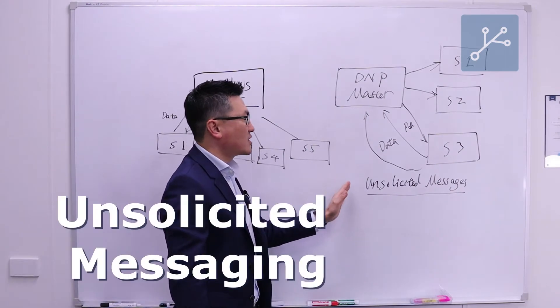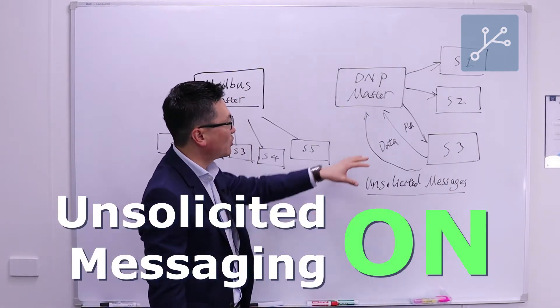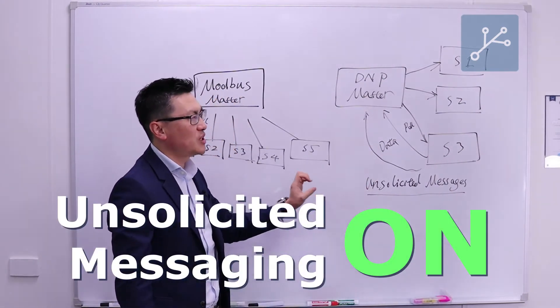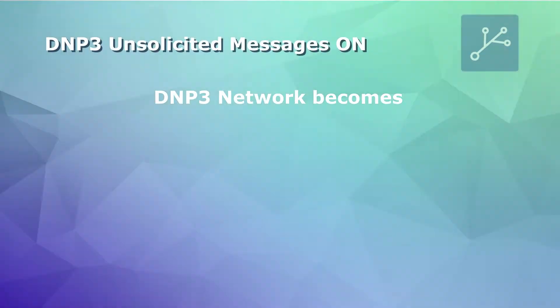With the DNP3, once the unsolicited switch has been switched on for all the masters hanging on to the same slave, the certainty becomes less.